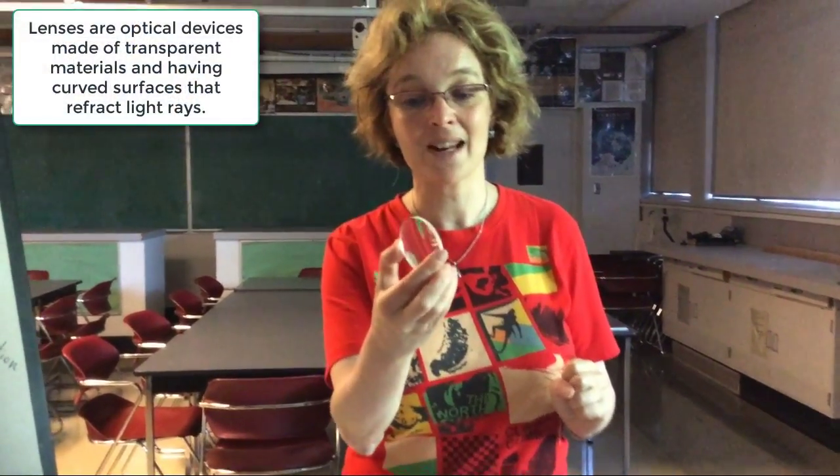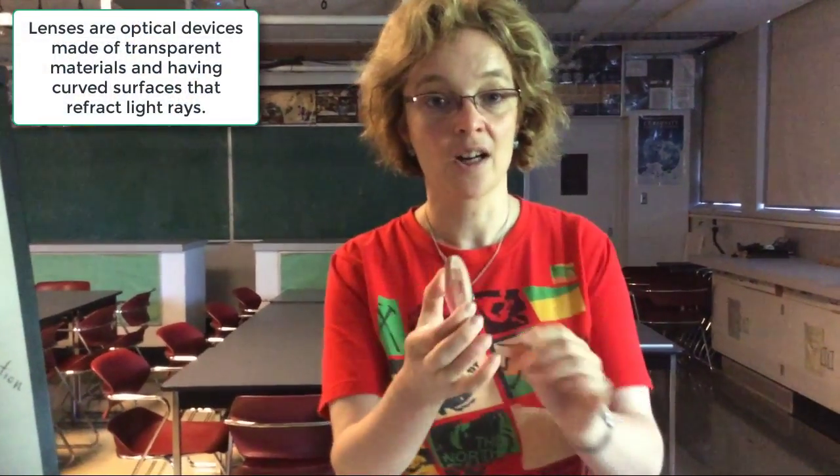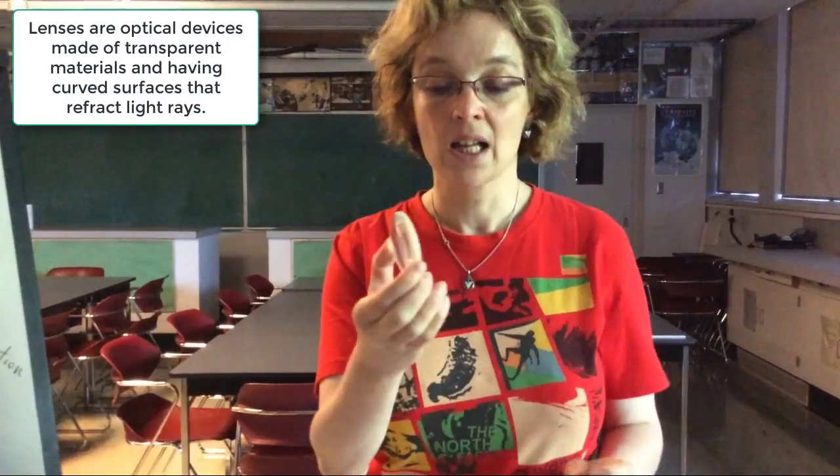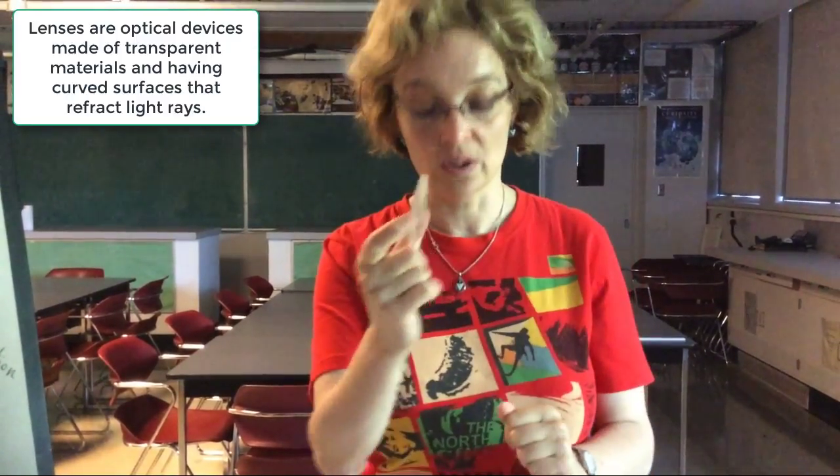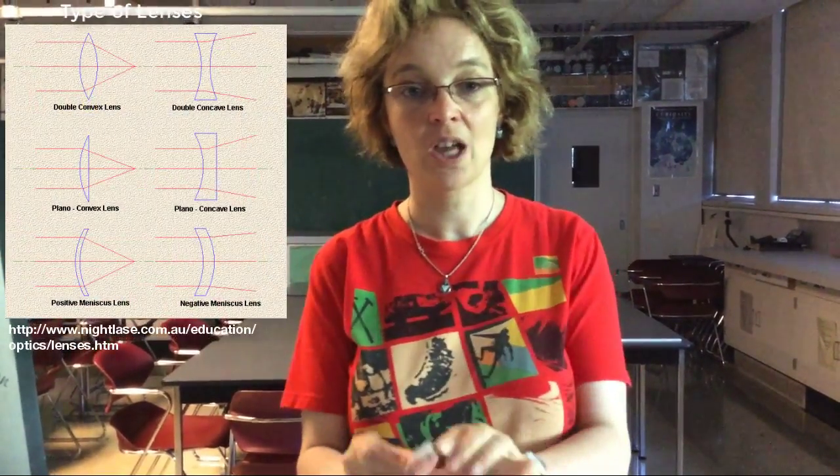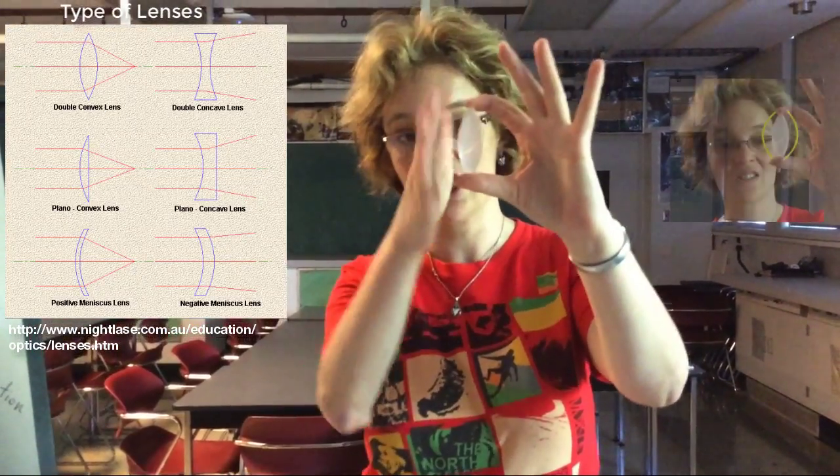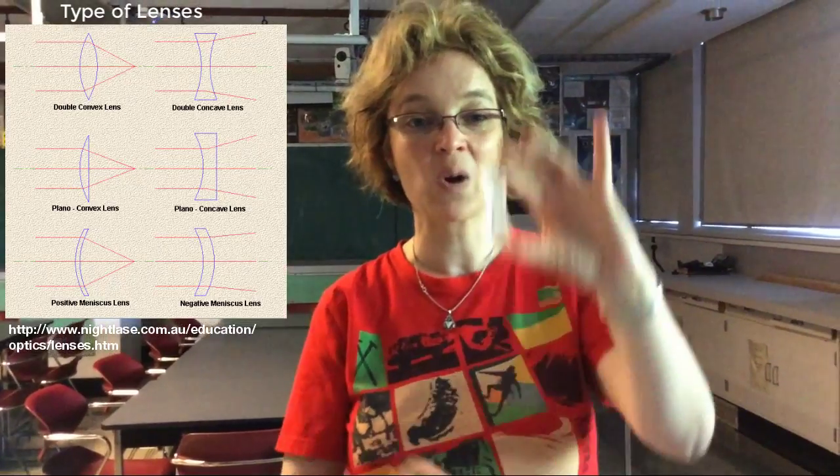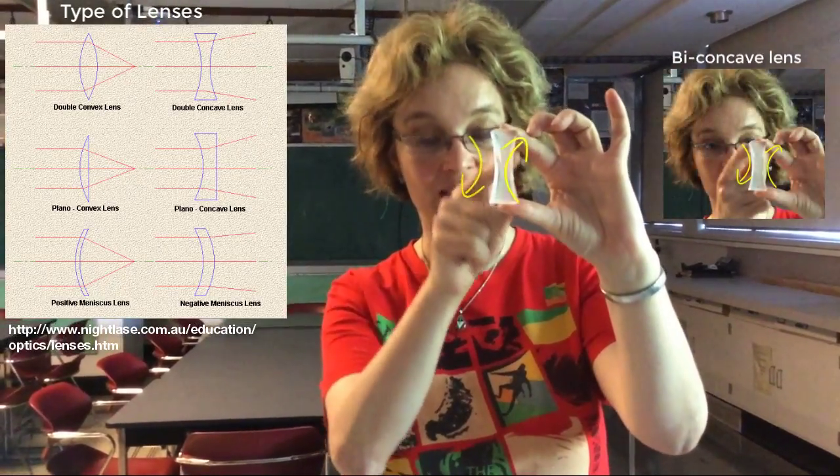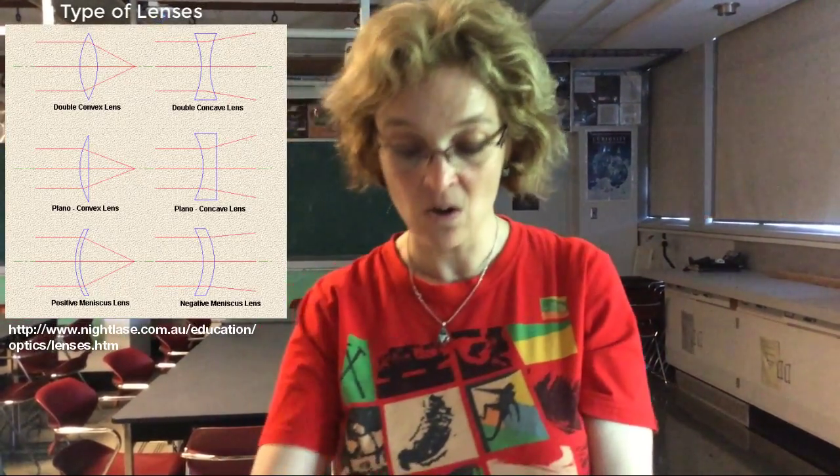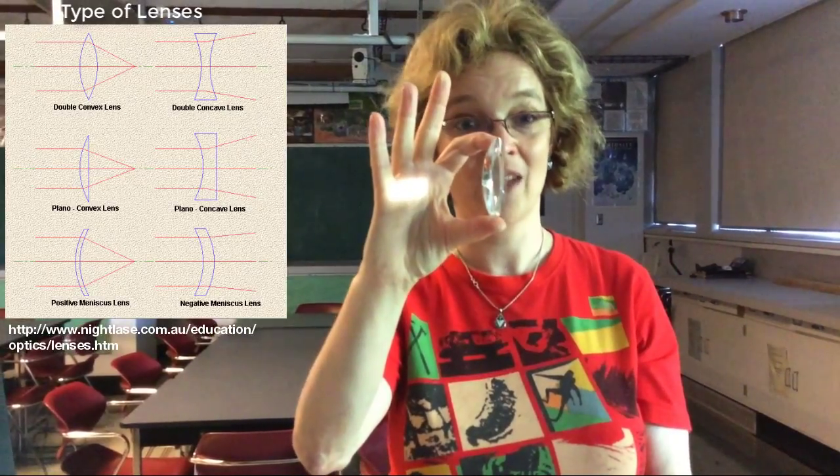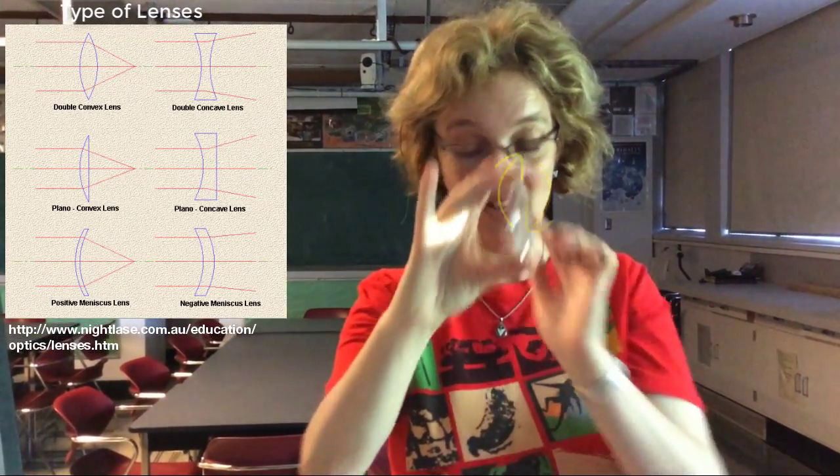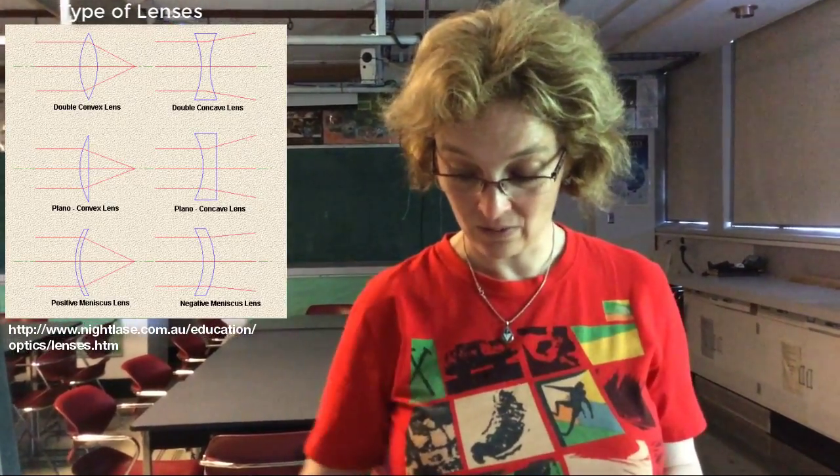Lenses are made out of materials that are transparent to light, and they have curved surfaces. For example, this lens is called a biconvex lens, two bellies on both sides. This is called biconcave lens, concave like a cave. This is also biconvex lens. You can see it now, the bellies of the lens.